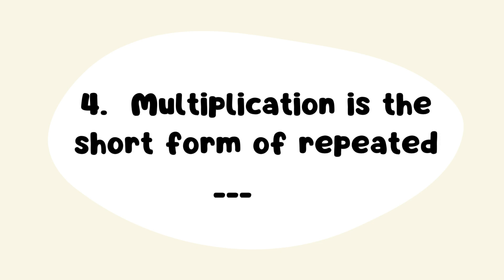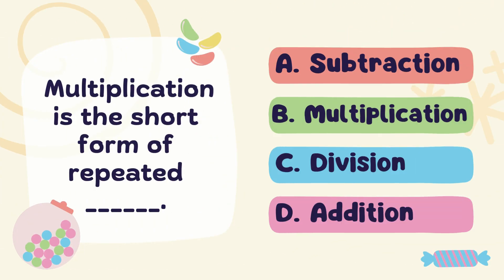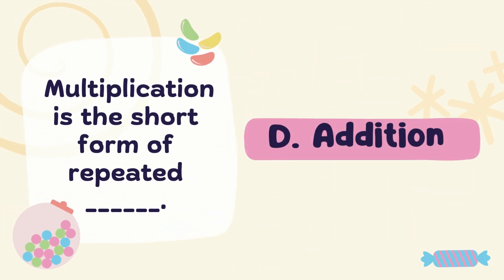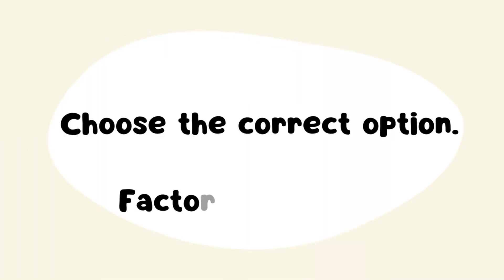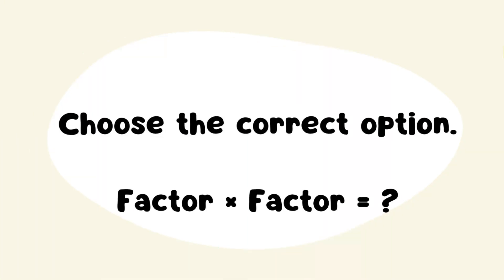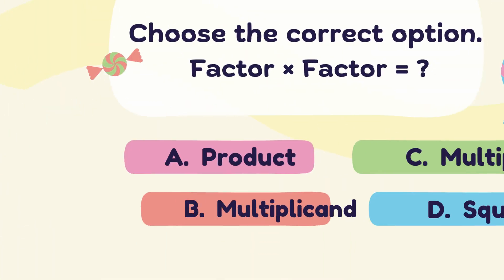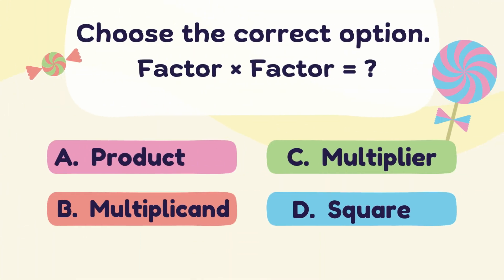64. Question: Multiplication is the short form of repeated ___? Answer: Option D. Addition.